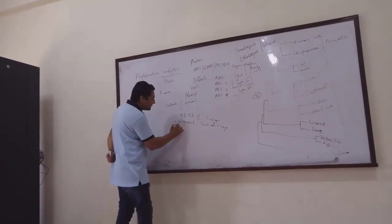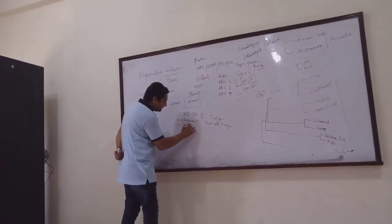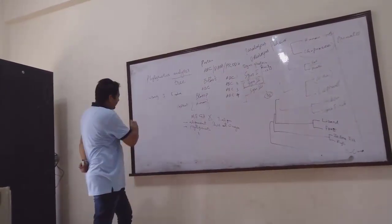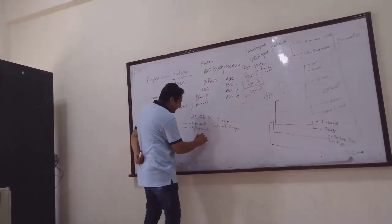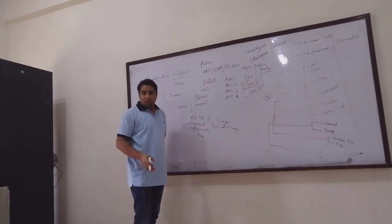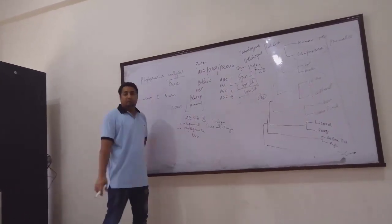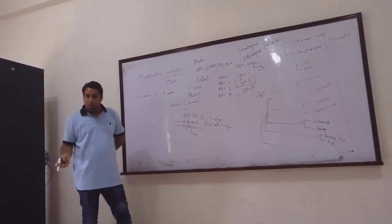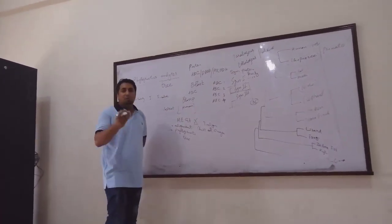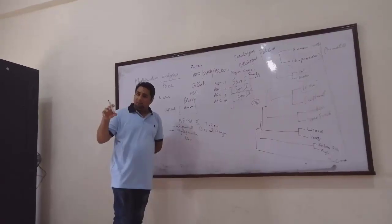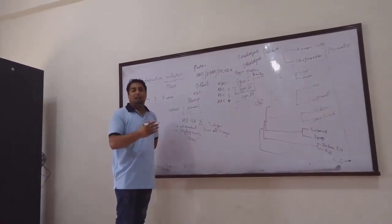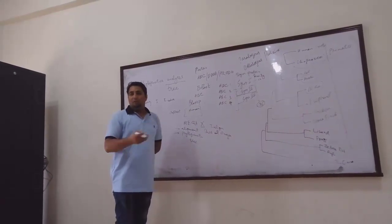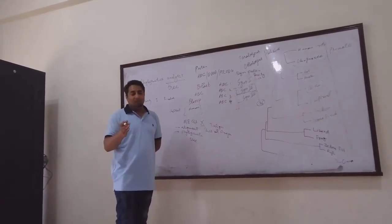After that you have to generate the phylogenetic tree. There are so many types of phylogenetic tree — maximum parsimony, likelihood method — so you have to read which one is accurately related to your experiment, which type of study you are going to do. These depend on your literature.